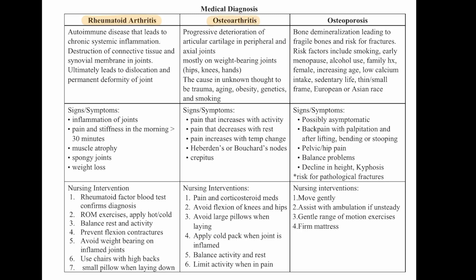Osteoarthritis is a progressive deterioration of articular cartilage in the peripheral and axial joints, mostly weight-bearing joints: hips, knees, hands. The cause is unknown, though it could be trauma, aging, obesity, genetics, and smoking. Key distinction: rheumatoid arthritis presents with morning stiffness greater than 30 minutes, whereas osteoarthritis pain increases with activity, decreases with rest, and increases with temperature change. You'll also see Heberden's or Bouchard's nodes, and crepitus. Nursing interventions: pain and corticosteroid medications, avoid flexion of knees and hips, avoid large pillows when lying, apply cold packs when joint is inflamed, and balance activity and rest — limit activity when in pain.